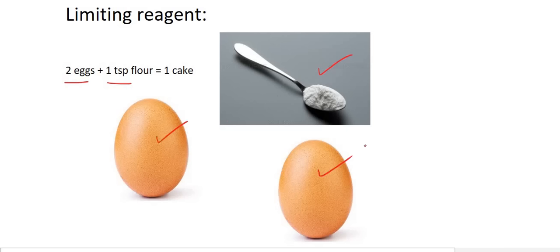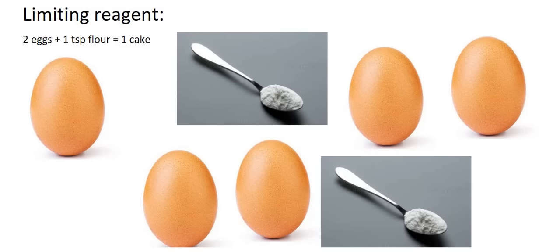Now we're going to look at a couple of situations. I want you to try and tell me whether we don't have enough flour or whether we don't have enough eggs. Let's say in someone else's fridge or cupboard we find two teaspoons of flour and five eggs. Now, you can't just go put all of that together — your cake is going to taste very strange.